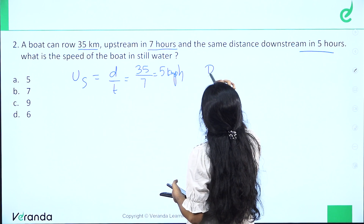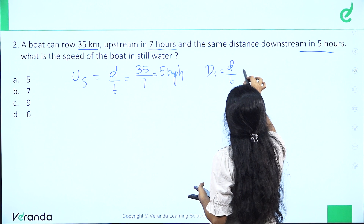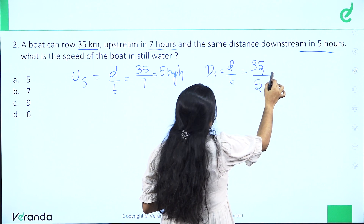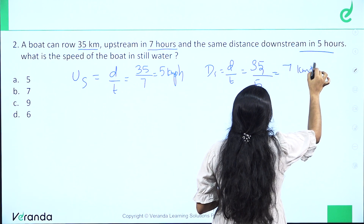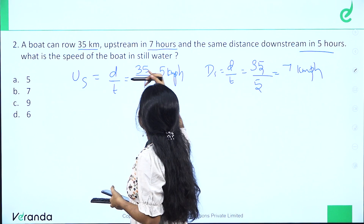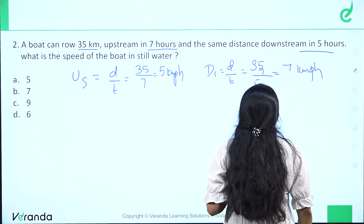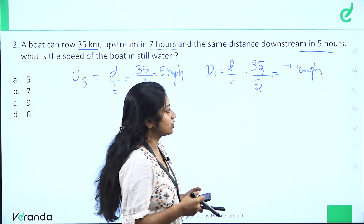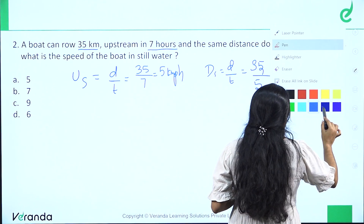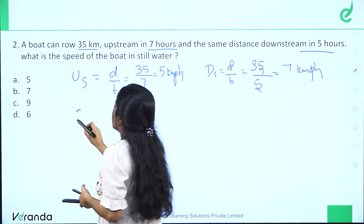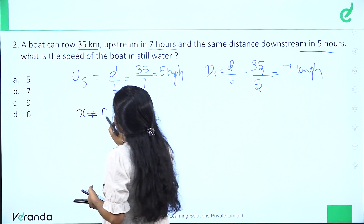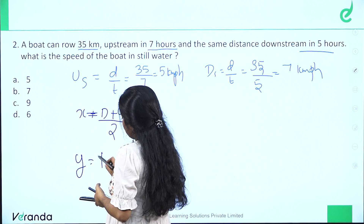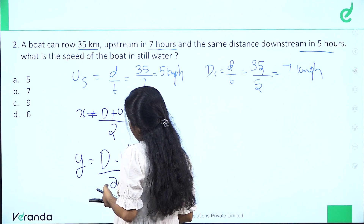Downstream speed is distance divided by time. The distance is the same and time is 35 hours, so 35 by 5 gives 7 km per hour downstream. Upstream speed is 5 km per hour and downstream speed is 7 km per hour. The formula is: boat speed x equals (d plus u) divided by 2, and stream speed y equals (d minus u) divided by 2.